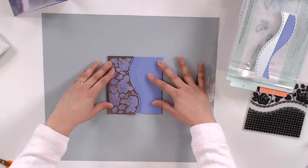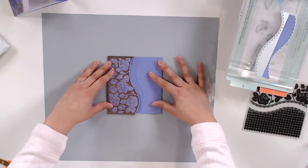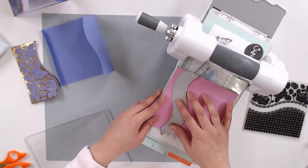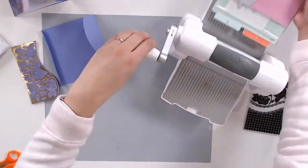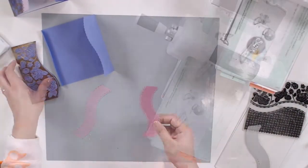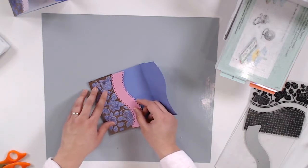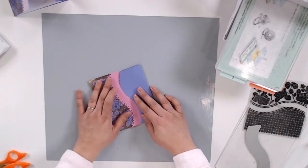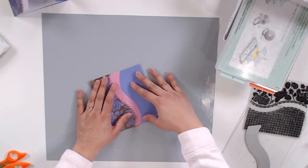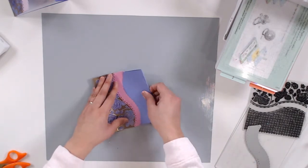I'm going to die cut a full banner using the banner die from some pink cardstock. This card design gives you some flexibility as to where you place the pink banner, and I want to leave a gap between the scalloped edge and the banner so that the sentiment peeks through.